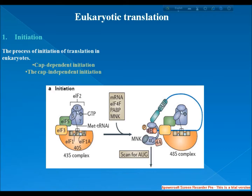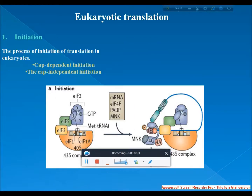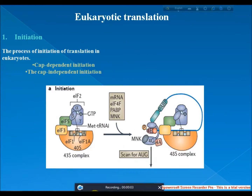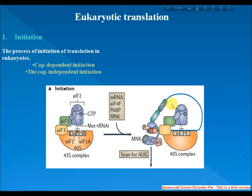eIF4A is an ATP-dependent RNA helicase which aids the ribosome in resolving secondary structures formed by the mRNA transcript. Another protein associated with the eIF4F complex is PABP, which binds the poly-A tail of most eukaryotic mRNA molecules. This protein has been implicated in playing a role in circularization of the mRNA during translation.